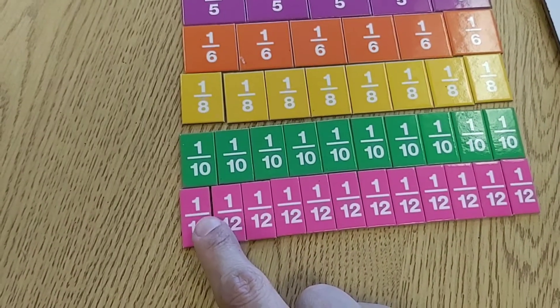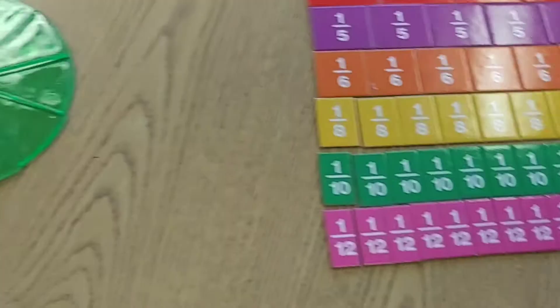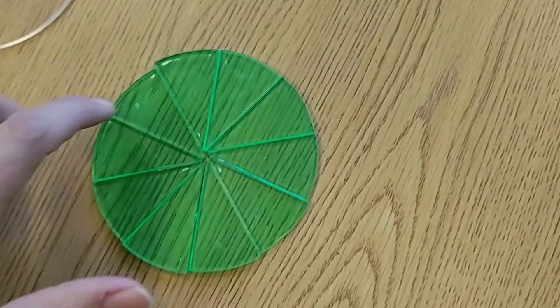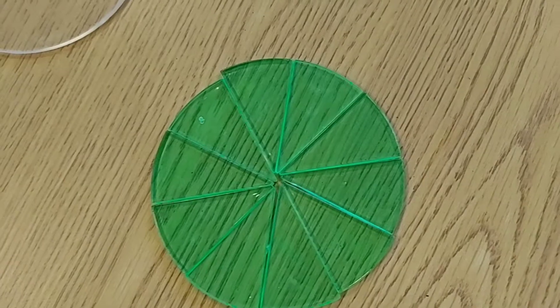So I can't have a twelfth that is the shape of a tenth. They have to all be the same size. Alright. One, two, three, four, five, six, seven, eight, nine, ten. Those are tenths.